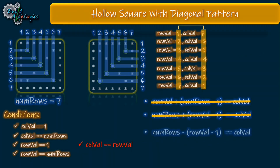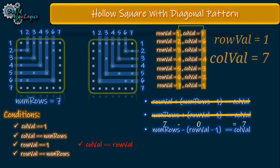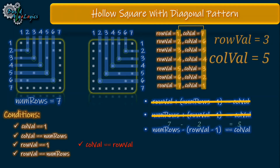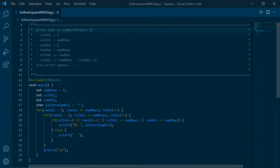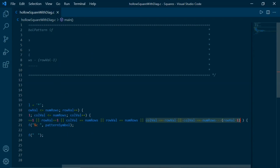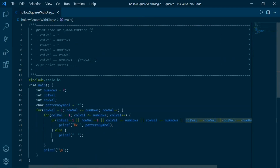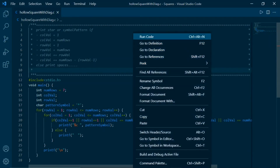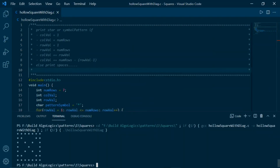Continuing the dry run: for `row_well` 3, `col_well` is 5, and so on — we've found the second condition: `col_well == numbers - row_well + 1`. Swapping the parts slightly for readability, we now have all six conditions. Taking the hollow square code and adding these two new diagonal conditions to the if block, we run it and see the output. Congratulations — we successfully wrote code to print all four square patterns.